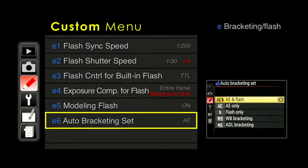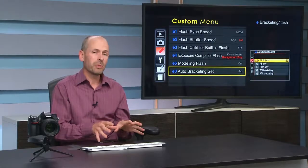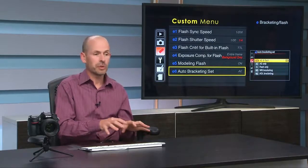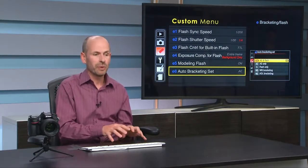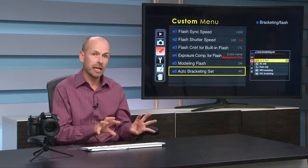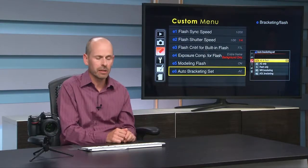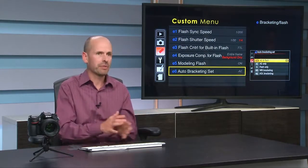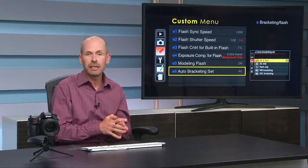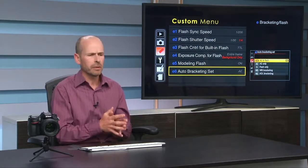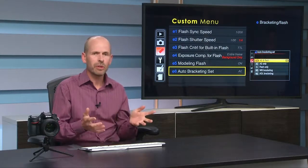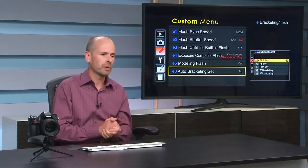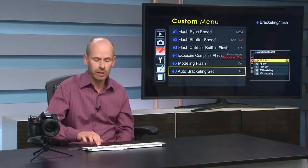Auto bracketing set. Normally bracketing is done for exposure reasons — you want a light, a normal, and a dark exposure. But you can do much more: exposure and flash, white balance, or active D-lighting where it uses different types of active D-lighting within the exposure. Most people just leave this on AE only, dealing with the auto exposure. But you can set it to anything else you need.